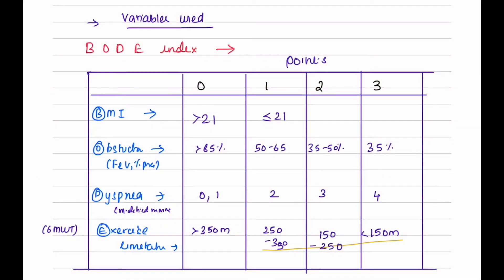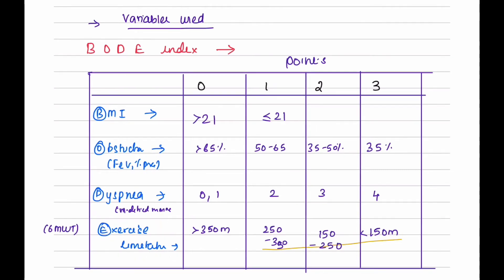So if BMI is greater than 21, the score would be zero. If the BMI is less than or equal to 21, the score would be one. Significant weight loss is a bad sign.